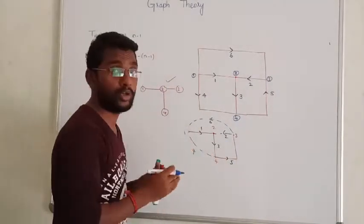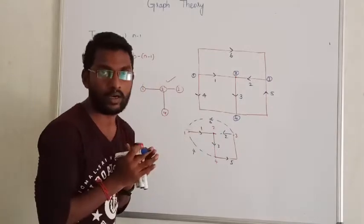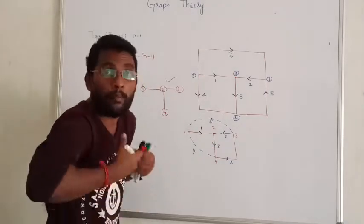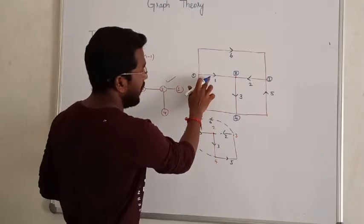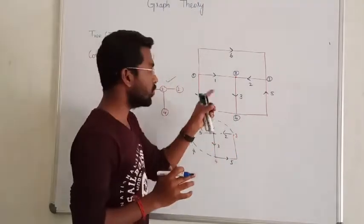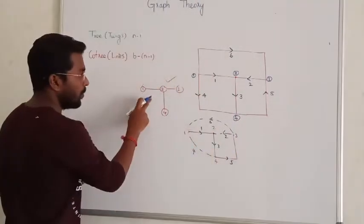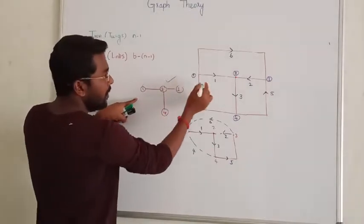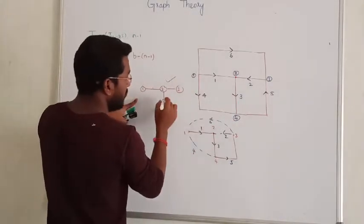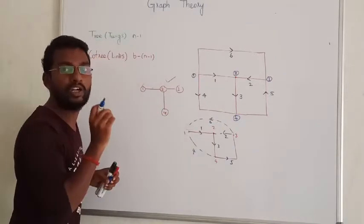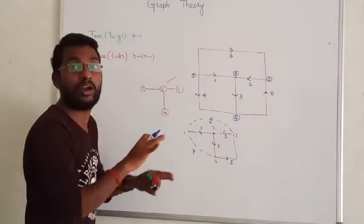After forming a tree, the remaining branches are called links. So in case number 1, branches 1, 3, and 5 are used to form the tree — those three branches are called twigs. In case number 2, branch numbers 1, 2, and 3 are used to form the tree, so 1, 2, 3 are called twigs. The remaining branches — for example branch numbers 3 and 5 — are called links.